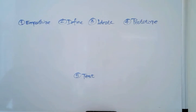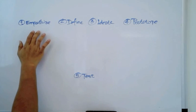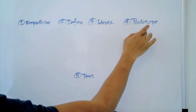This is what design and thinking method looks like. We start with empathize and then we define, ideate, prototype and test.